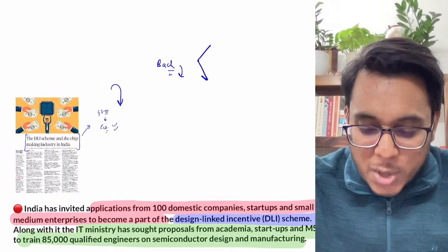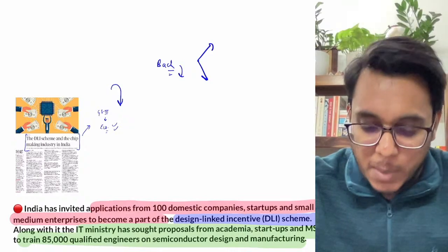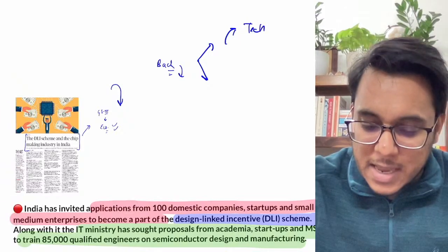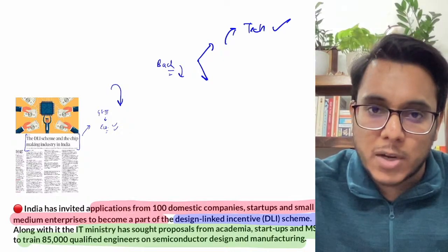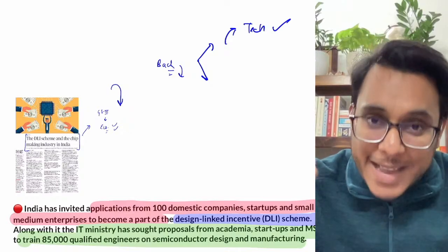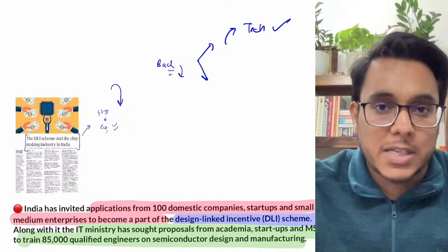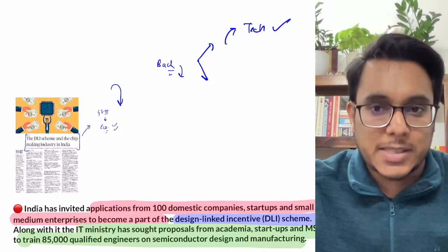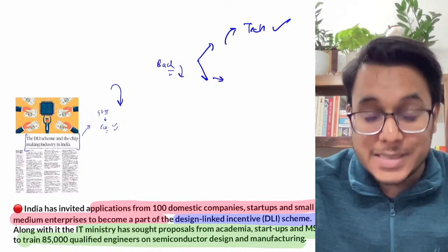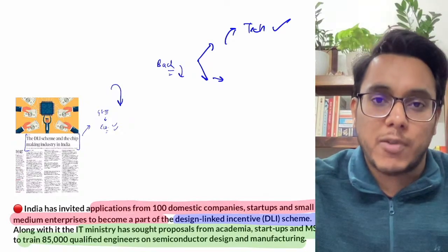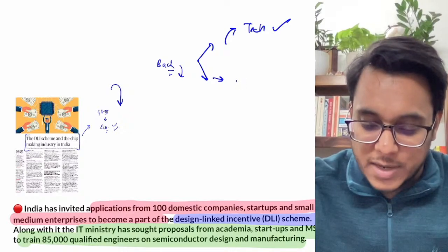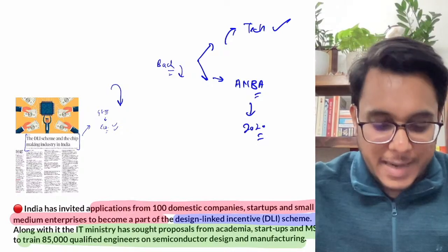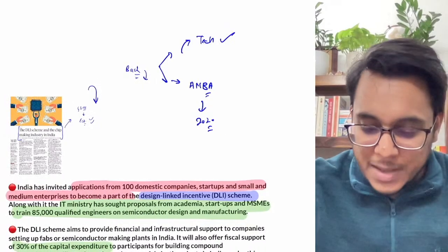After the pandemic, two major trends developed. First, reliance on tech gadgets increased enormously due to work-from-home — everyone needed personal computers, mobiles, and tablets. Second, India realized its over-dependence on foreign countries for critical components, which led to the launch of the Atmanirbhar Bharat Abhiyan in 2020. These two developments form the backdrop for understanding India's push toward semiconductor self-sufficiency.